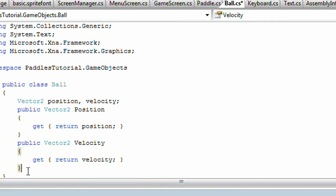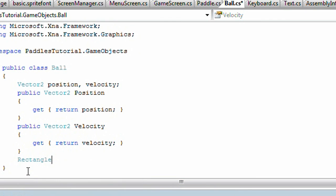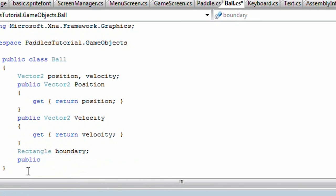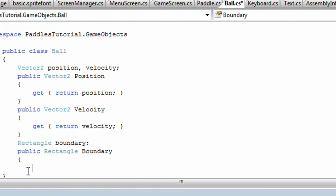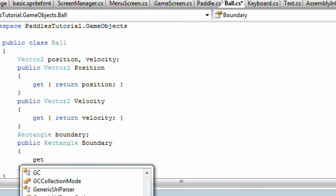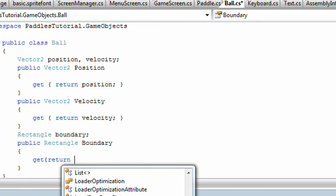Now we need a rectangle object for boundary. And then we need a property for that. Public Rectangle Boundary. And then we'll return lowercase boundary.